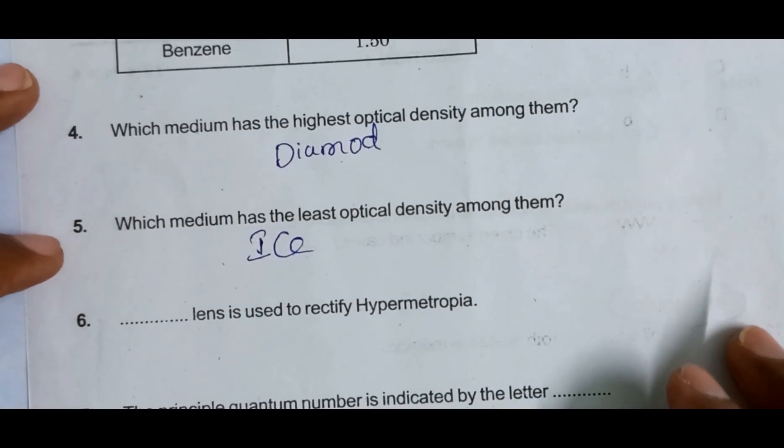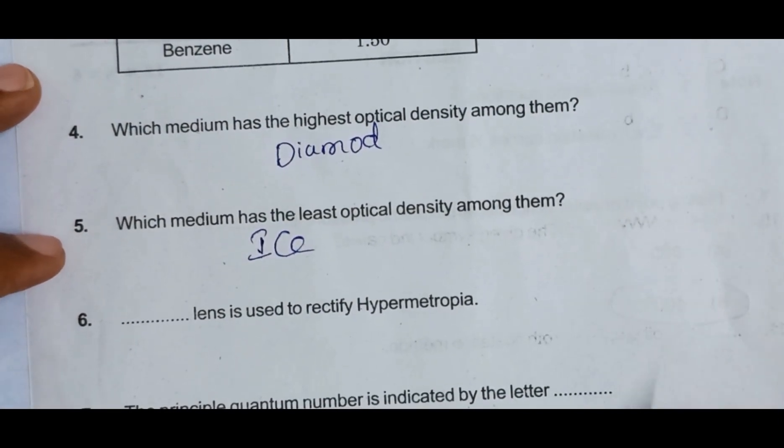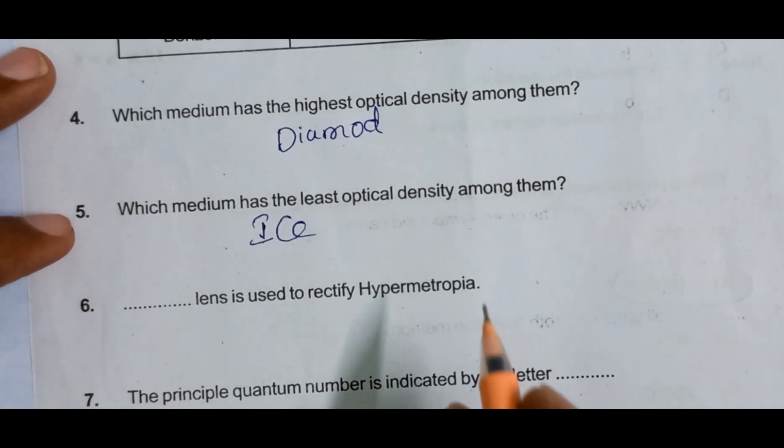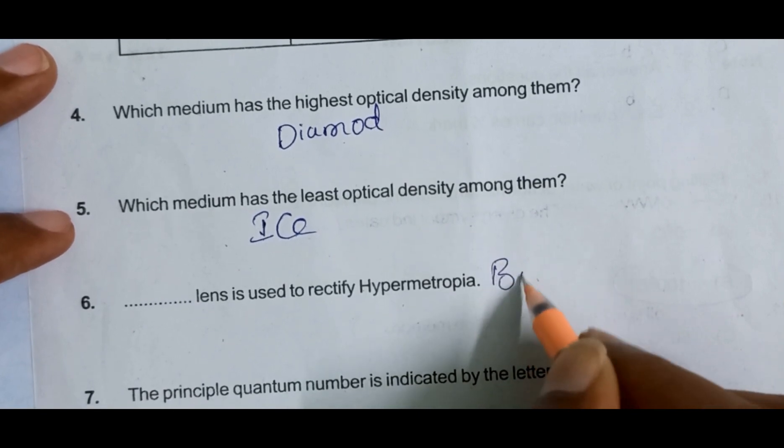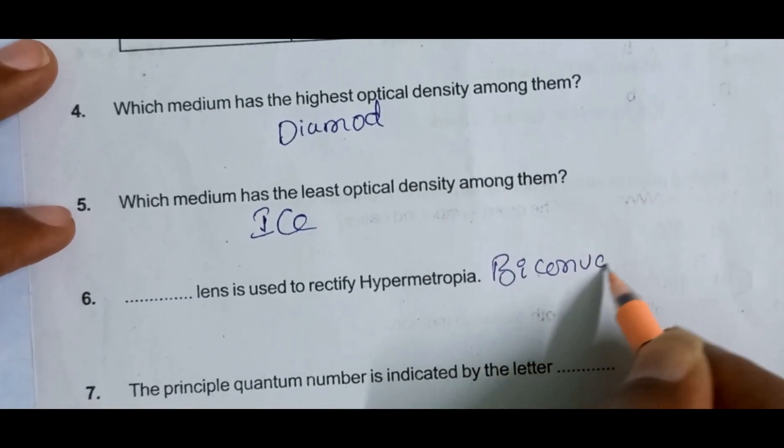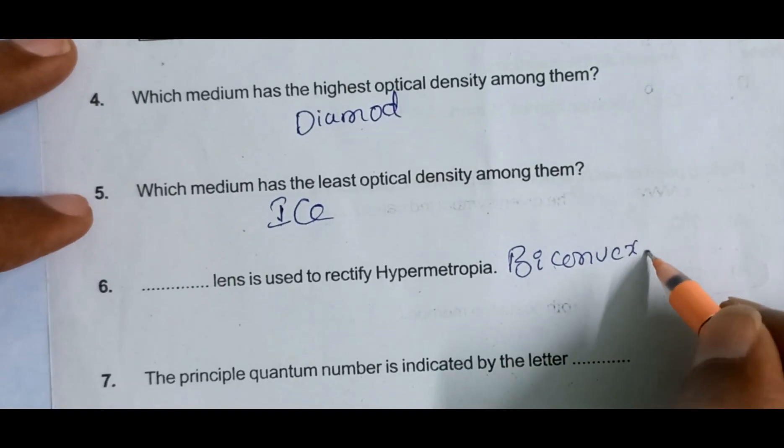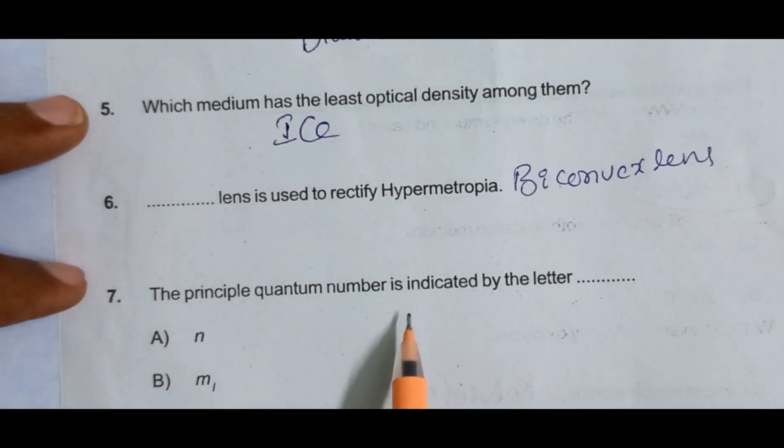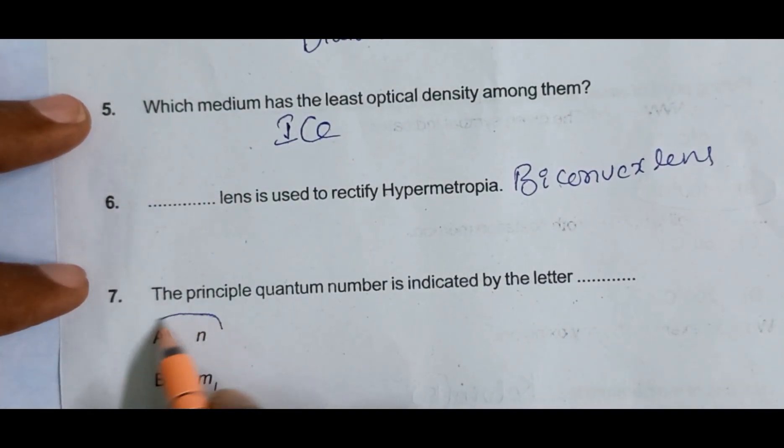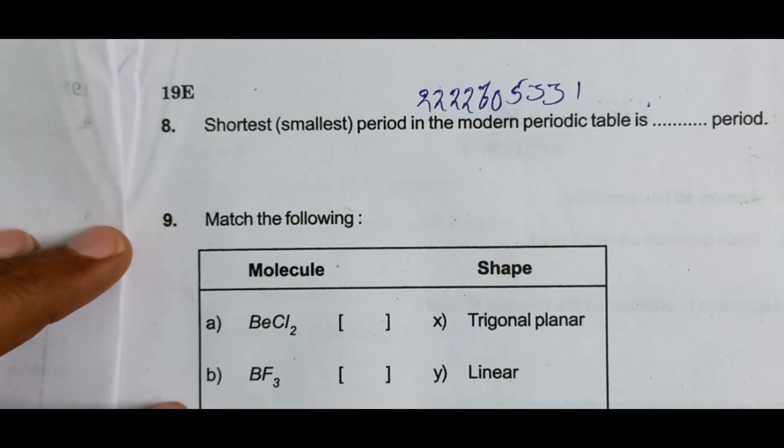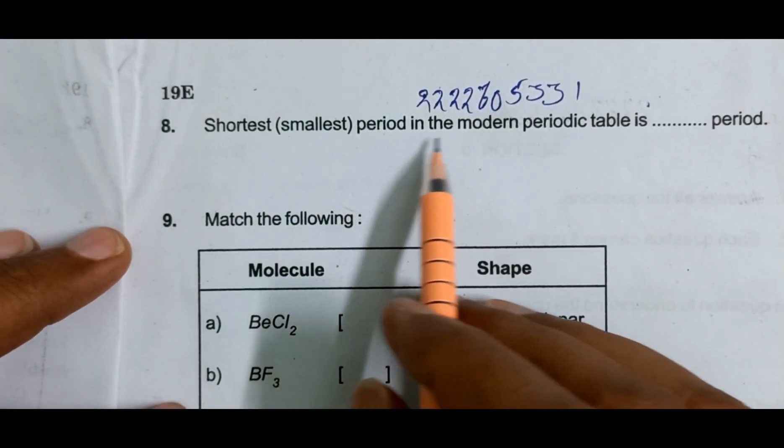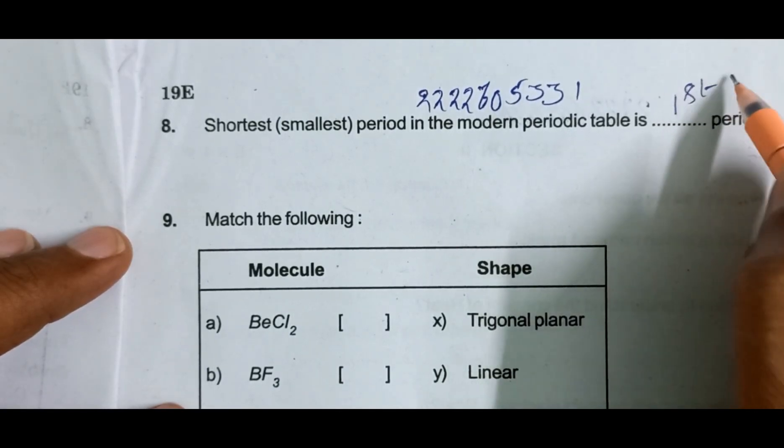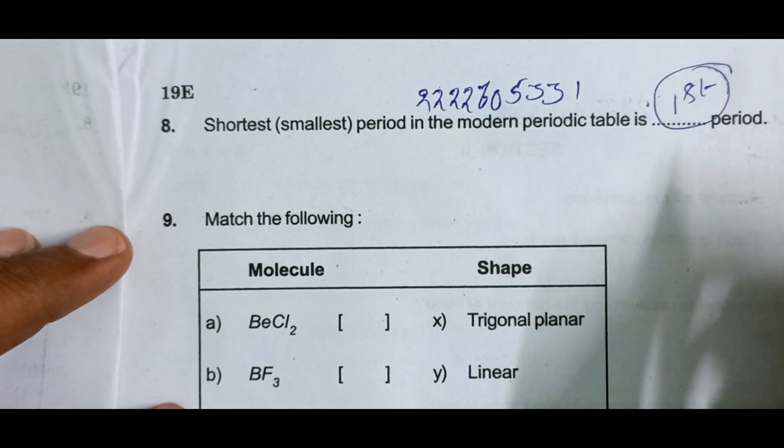Next, biconvex lens is used to rectify hypermetropia. Principle quantum number is indicated by the letter n. Shortest or smallest period in the modern periodic table is first period, that has two elements.